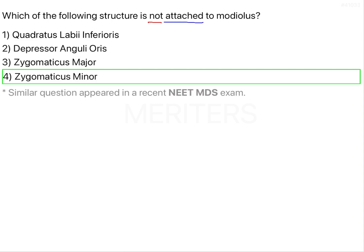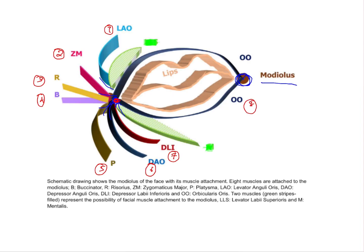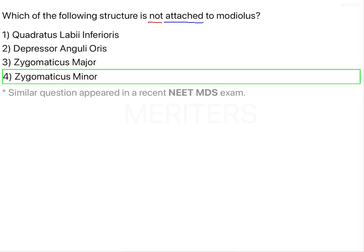Alternatively, they can reframe this question asking which muscles are attached to the modiolus with different options. The only way to answer is to know what is attached. If they rephrase or change the options, focus on what they're asking — whether it's the attached muscle or the one not attached. Don't rush; read the question correctly.